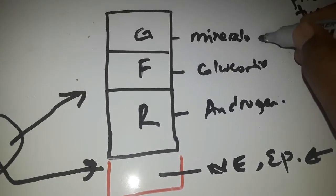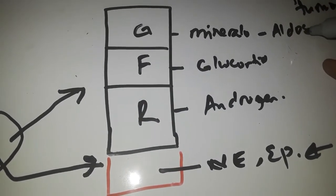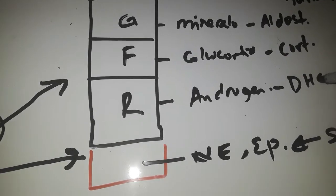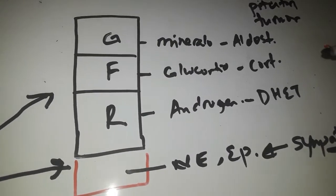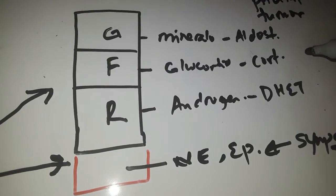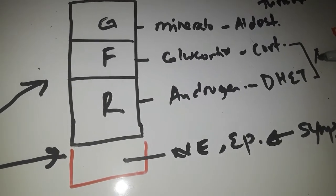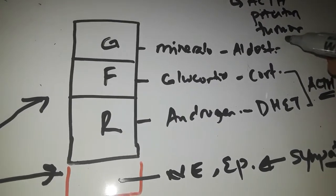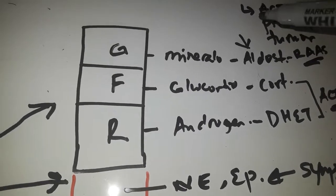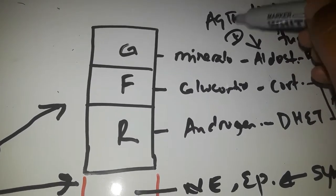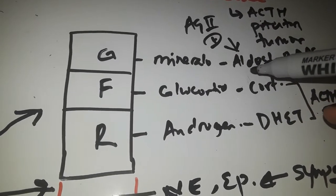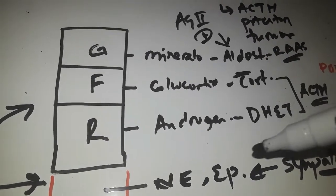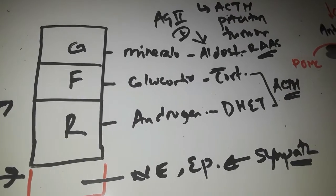One of the main mineralocorticoids is aldosterone. One of the main glucocorticoids is cortisol, and the main androgen is testosterone. Cortisol and androgen production are under control of adrenocorticotropin hormone (ACTH) from the anterior pituitary. Aldosterone is part of the renin-angiotensin-aldosterone system, stimulated by angiotensin-2.